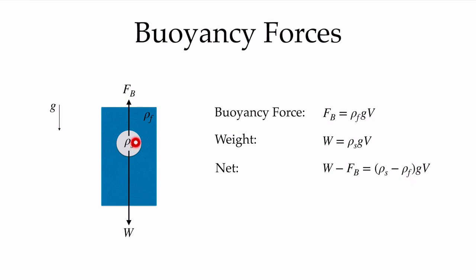If the density of the solid is lighter than the density of the fluid, then this particle will rise in the column of fluid. And if it's heavier, it will sink. We can also imagine that this was a different region of fluid with a different density than the rest of the fluid, and therefore we would get a motion of this part of the fluid because of those buoyancy forces. That's the essence of natural convection: when we have density differences in the fluid which arise because of temperature differences, we're going to generate a fluid motion.